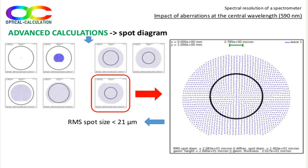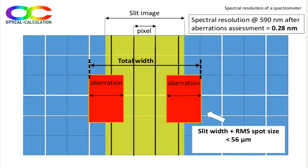The most appropriate spot size to consider is in fact the RMS one and not the geometrical one. It is smaller than 21 microns. By adding the RMS spot width to the slit width, we obtain the maximum width on the detector of a perfectly monochromatic beam at 590 nanometer. This maximum width is 56 microns. According to the spectral dispersion calculated before, it limits the spectral resolution to 0.28 nanometer.